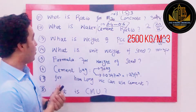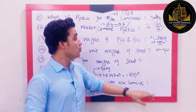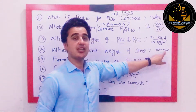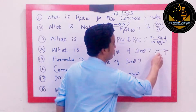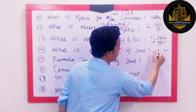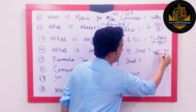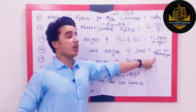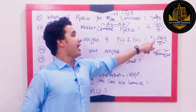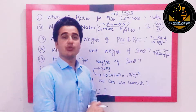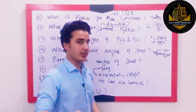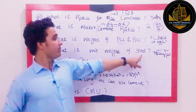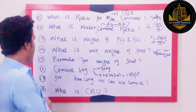Question number 14: What is the unit weight of steel? The unit weight of steel is 7850 kilogram per cubic meter. You need to remember these values as they are important for MCQ-type questions and are commonly used during the construction process.